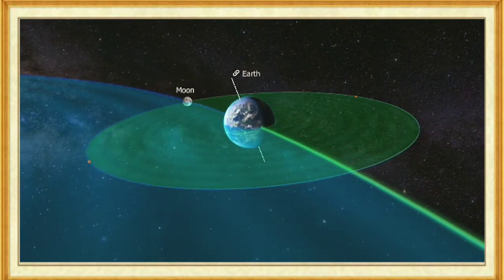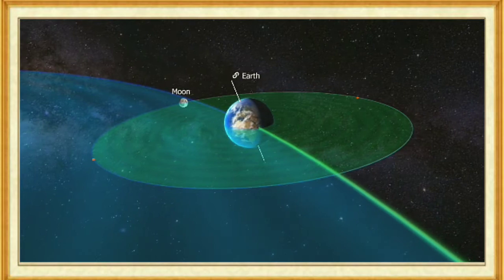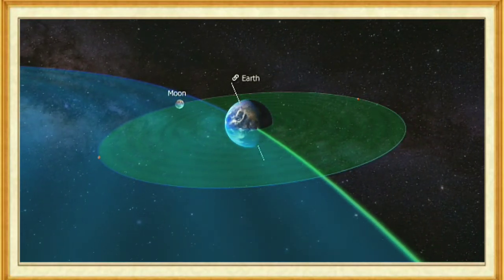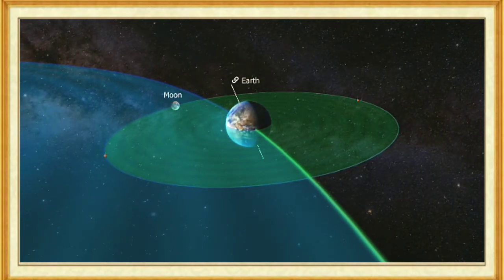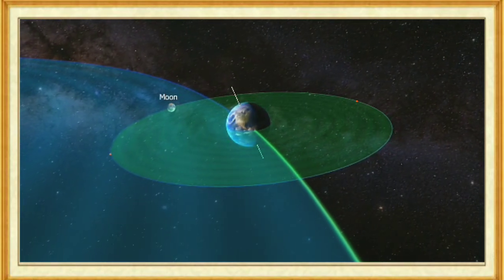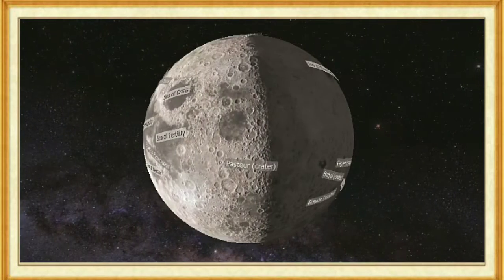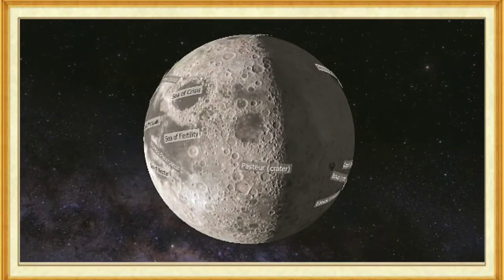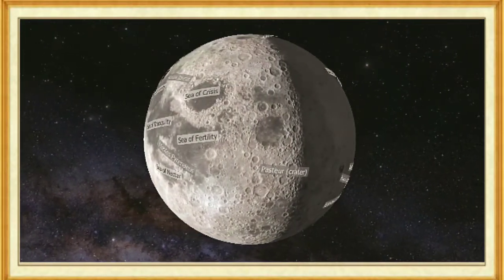The high tides caused by the Moon's gravity have an effect on the Moon as well. As a result, the Moon is slowly moving away from the Earth. Its orbit is expanding by 4 centimeters every year. The Moon is the fifth largest satellite in the solar system, orbiting the Earth at a distance of 384,000 kilometers.